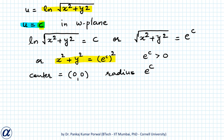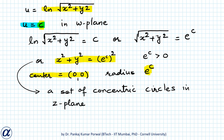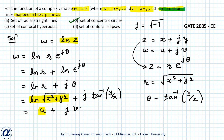As c changes, the radius e^c of the circle will change but the center will remain at (0,0). So this equation represents a set of concentric circles in the z plane. Therefore, the lines u equals to c in the w plane will be mapped to concentric circles x²+y² equals to e^(2c) in the z plane. Our answer will be (b): a set of concentric circles.